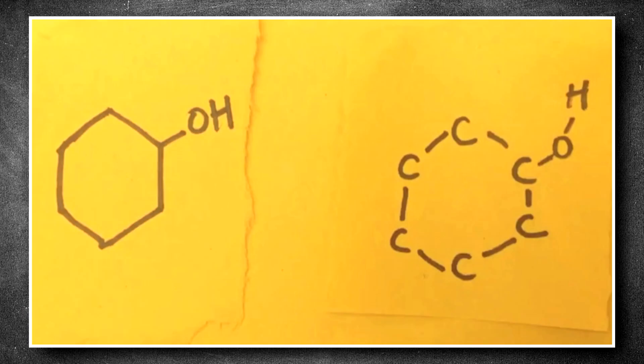Here's a skeletal diagram of another molecule. We'll decode it into its structural diagram. Each vertex is a carbon atom, so we're looking at a six-membered carbon ring. One of the carbons has an OH group, or a hydroxyl group, attached.